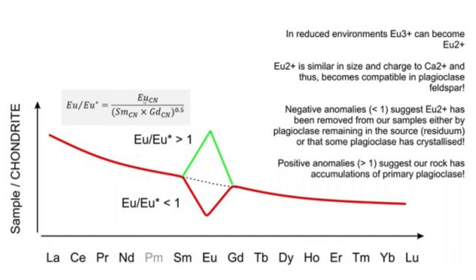If a magma crystallizes plagioclase, most of the europium will be incorporated into this mineral. The rest of the magma will then relatively be depleted in europium. If this europium-depleted magma then gets separated from its plagioclase crystals and subsequently solidifies, its chemical composition will display a negative europium anomaly, simply because most of the europium is locked up in the plagioclase.